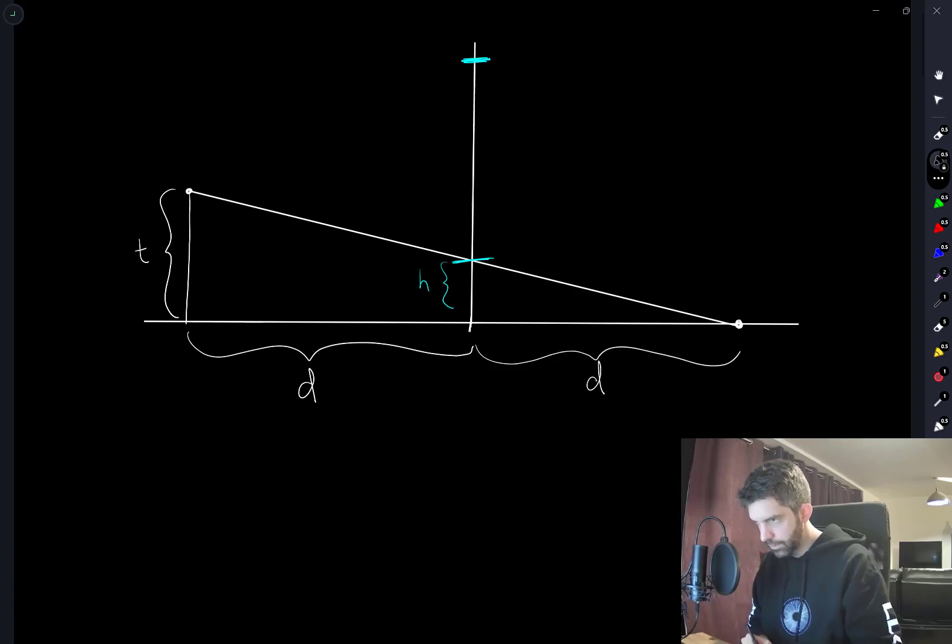So we have T is equal to 2H, is that one of the options? By similar triangles, T is equal to 2H. And D does not matter, and this is one of the options that we're given.